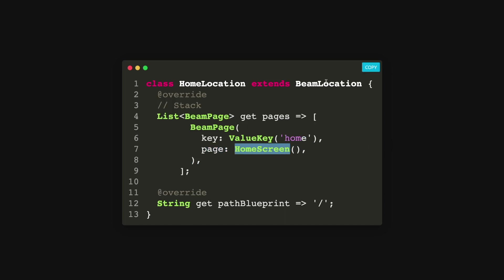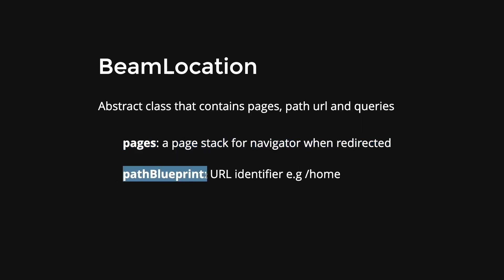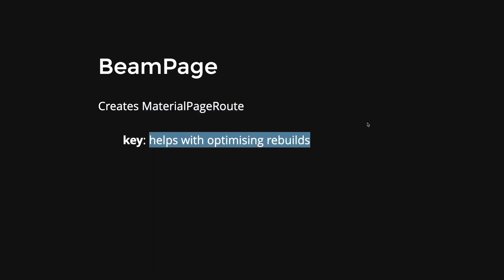Let me explain what a BeamLocation is and its two getter methods, and what a BeamPage is. The BeamLocation is an abstract class that contains pages, path URLs, and queries. The two required methods are pages — which is a page stack for the navigator when redirected — and the path blueprint, which is a URL identifier, for example, backslash home. For the BeamPage, it creates a MaterialPageRoute for our navigation, and the key property helps with optimizing rebuilds.